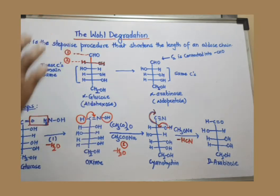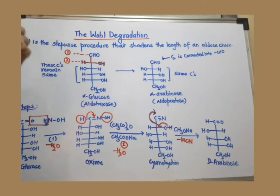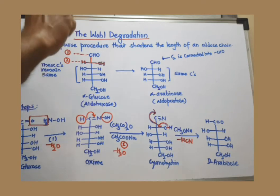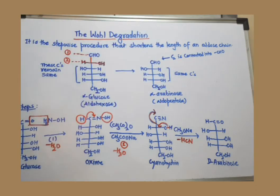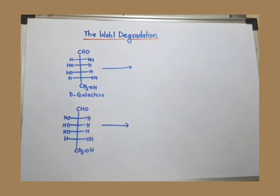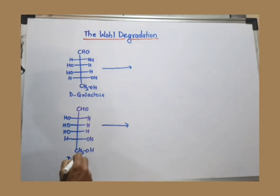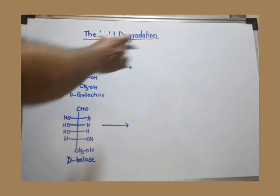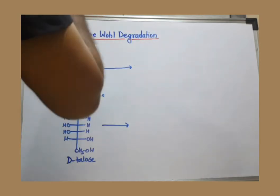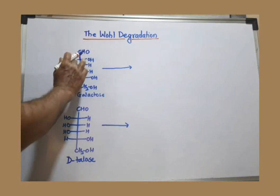We will now discuss an important part of Wohl degradation where we take two epimers. Epimers are diastereomers having different configuration only at the alpha carbon; the rest of the asymmetric carbons have similar configuration. We will see what happens when Wohl degradation is performed with galactose and D-talose. We will convert directly to the final product — just break the bond between C1 and C2, remove the aldehyde group, and convert carbon 2 into an aldehyde group.